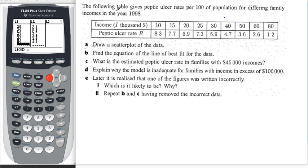In this example, we are looking at a table which gives the rate of ulcers per 100 people in a population for differing family incomes in the year 1998. The incomes vary from 10 up to 80, but remember the scale is in thousands, so incomes of $10,000 up to $80,000. The rate of ulcers goes from 8.3 down to 1.2, so you can immediately see that as income increases, the rate of ulcers decreases.